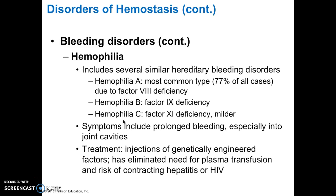The next bleeding disorder is hemophilia. It includes several different hereditary bleeding disorders. There's hemophilia A, which is the most common type at 77% of all cases, and is due to a factor 8 deficiency. Hemophilia B is a factor 9 deficiency, and hemophilia C is a factor 11 deficiency and is a milder disorder.